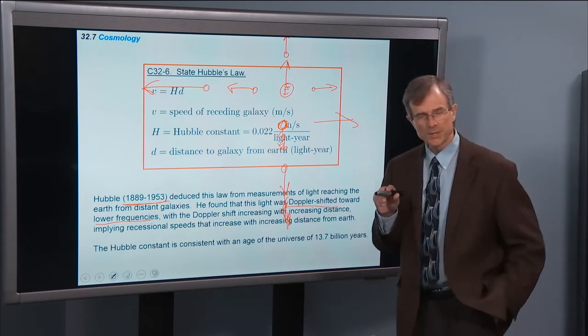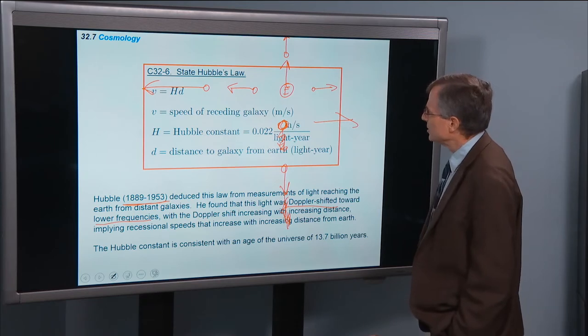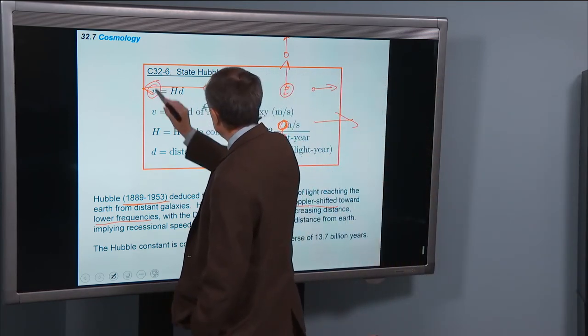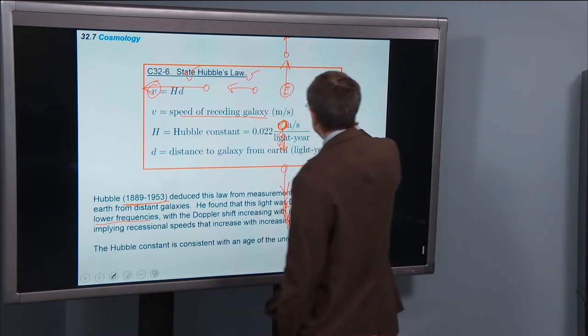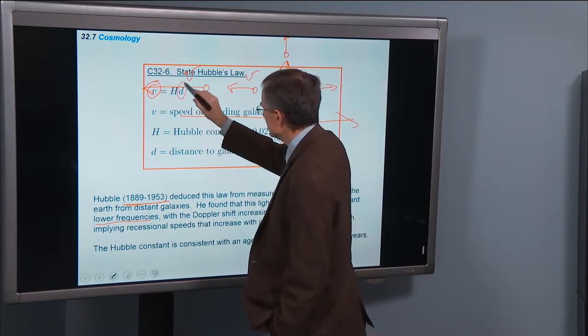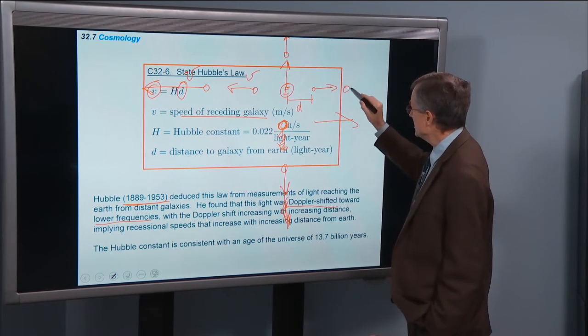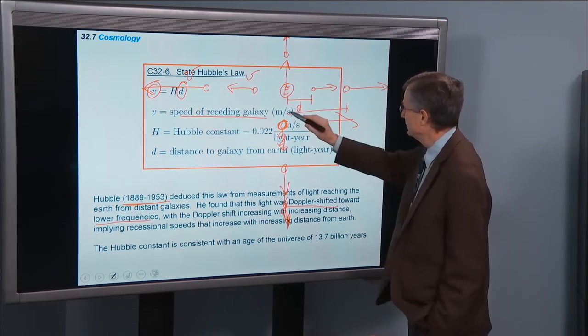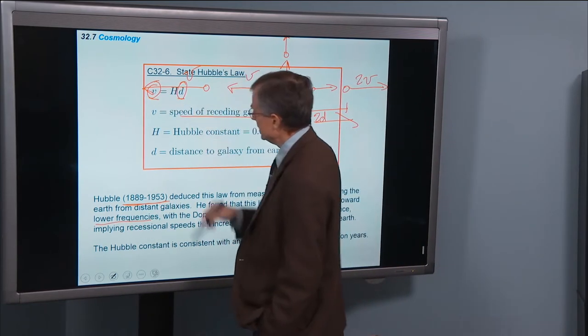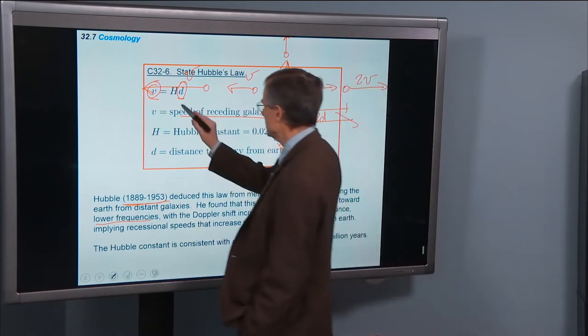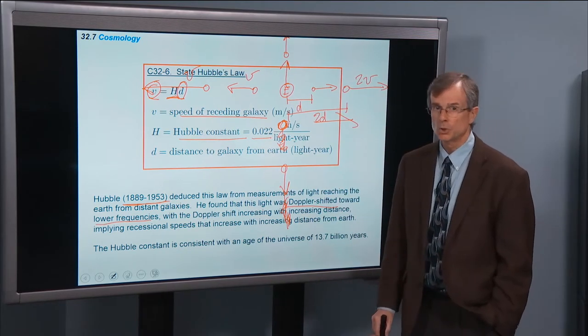And then he found that the Doppler shift increased with increasing distance, implying that recessional—by recessional it means moving away from us—with increasing distance from the Earth. So this V represents the speed of recession, the speed that we're looking at here. It gets greater the farther you are away, and d is the distance to the galaxy from the Earth. So that's the distance here. As you increase the distance, you go to 2d, then you're going to be at 2 times the speed. So that speed and the distance to the galaxy are directly proportional to each other, and the constant of proportionality is called the Hubble constant. And its value is 0.022 meters per second per light year.